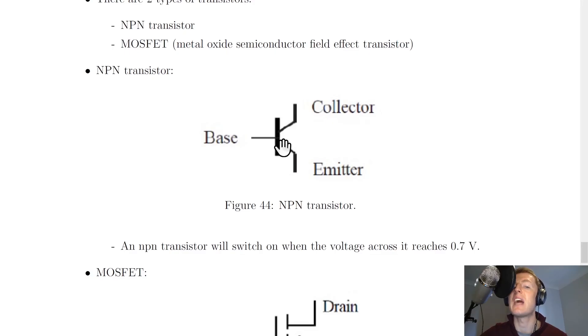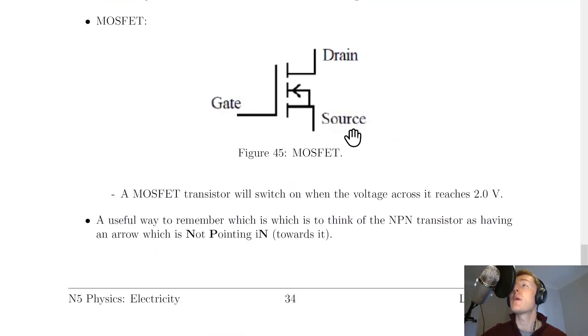The NPN transistor has an arrow pointing away from the transistor, so this has an arrow that is not pointing in for the NPN transistor. That might be a useful way to try and remember which one is which.